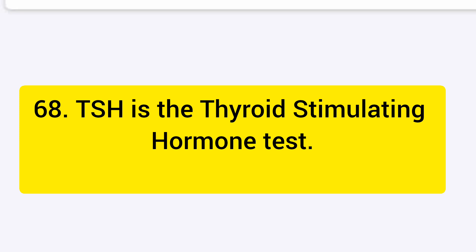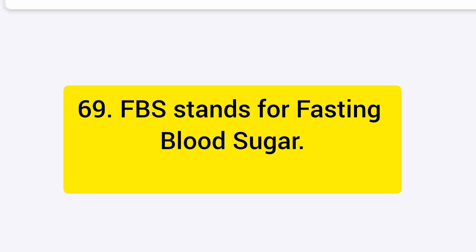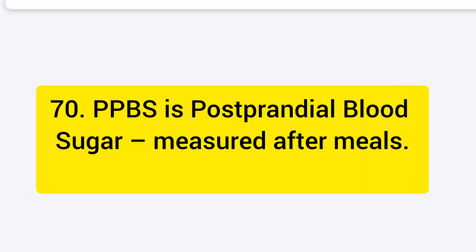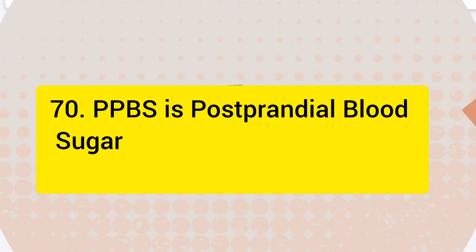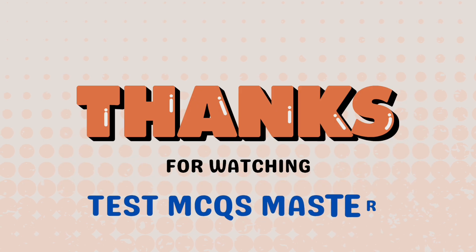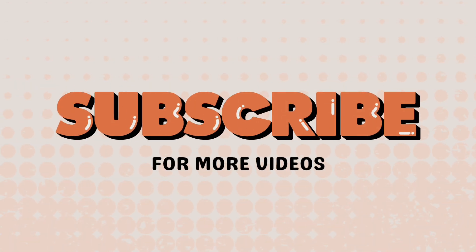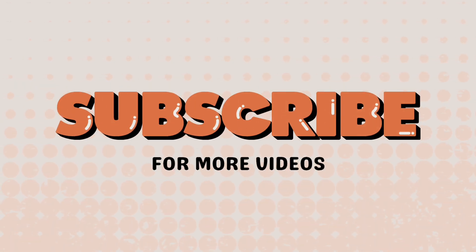TSH is the thyroid stimulating hormone test. FBS stands for fasting blood sugar. PPBS is post-prandial blood sugar. That covers the top nursing abbreviations — great job! Like, share, and subscribe for more exam-focused nursing content.